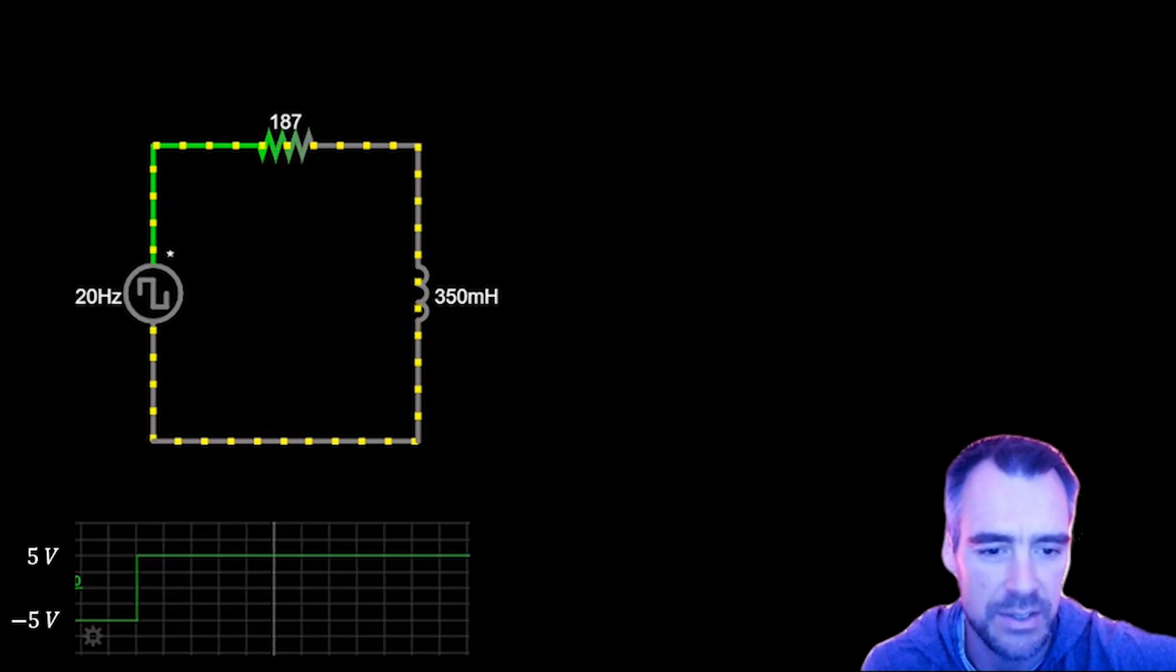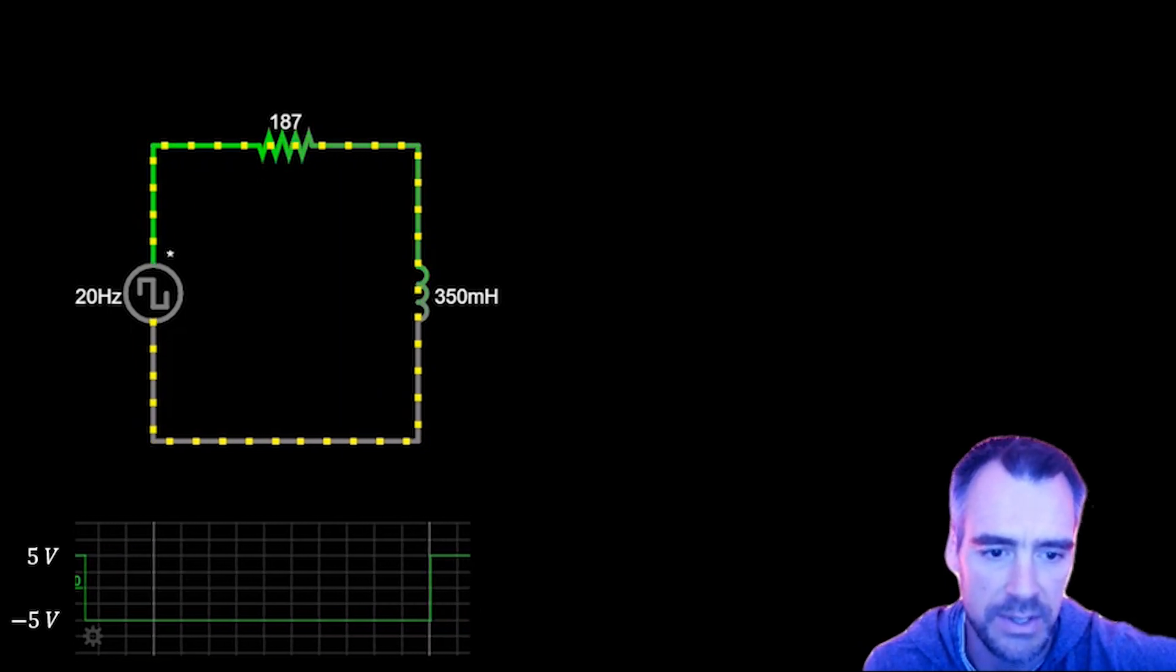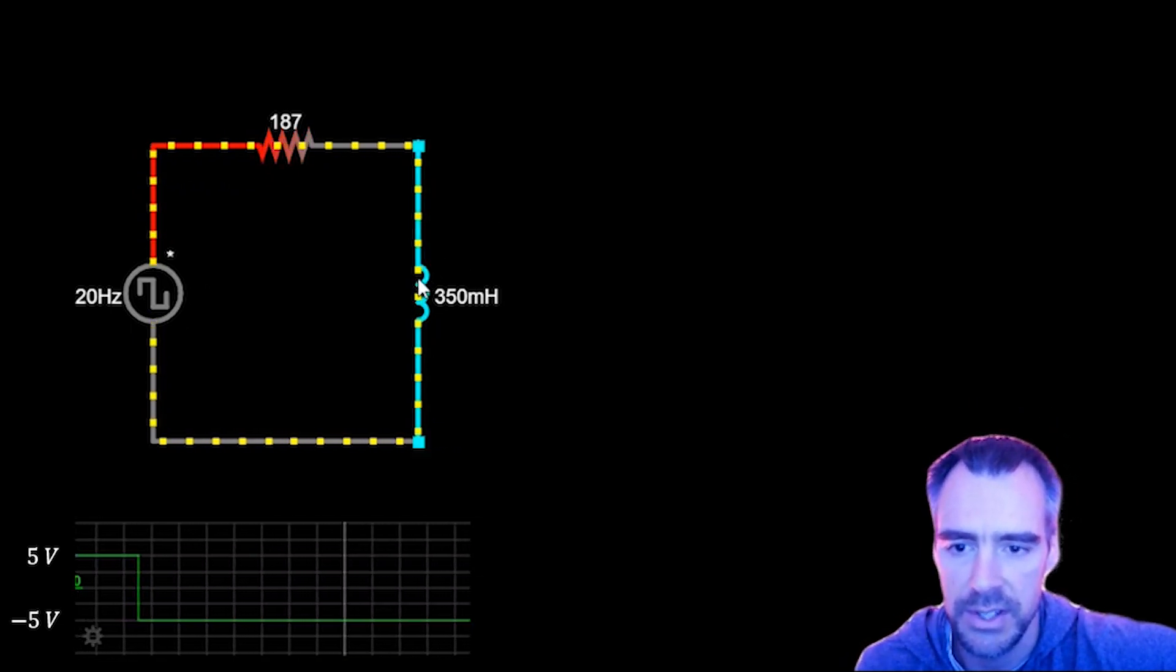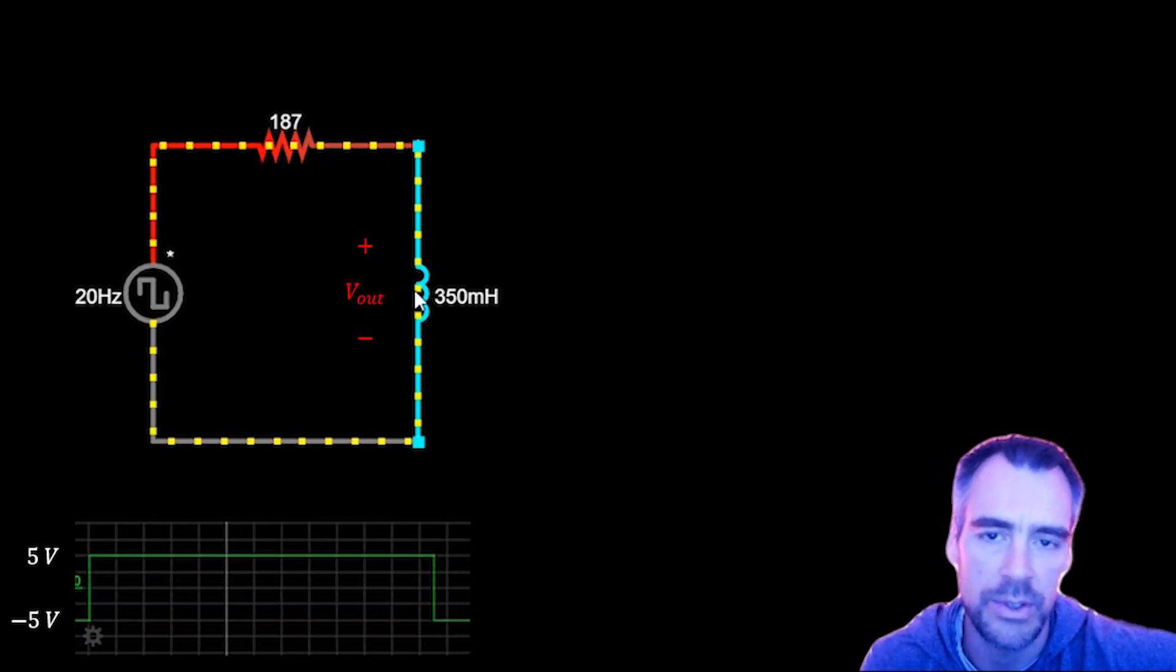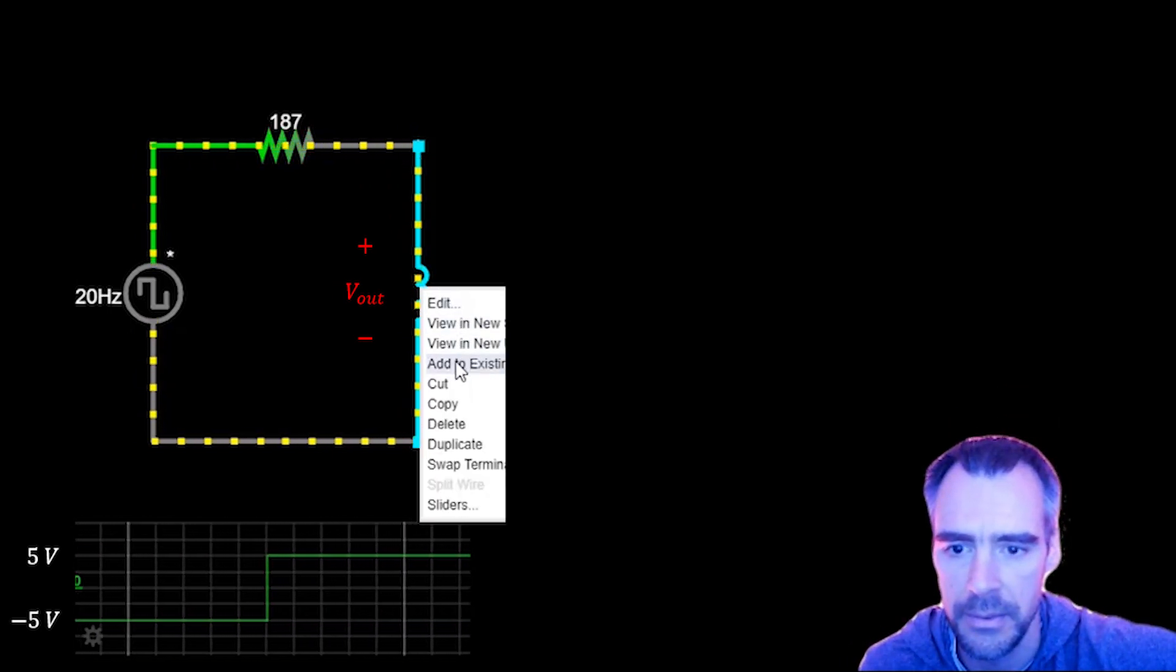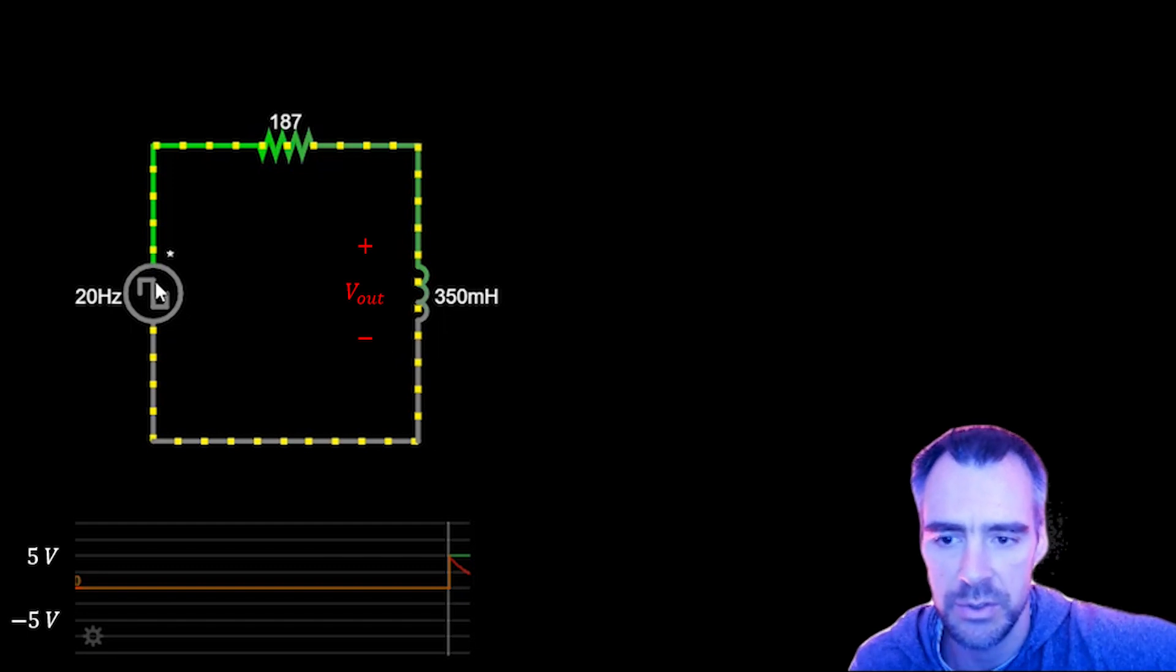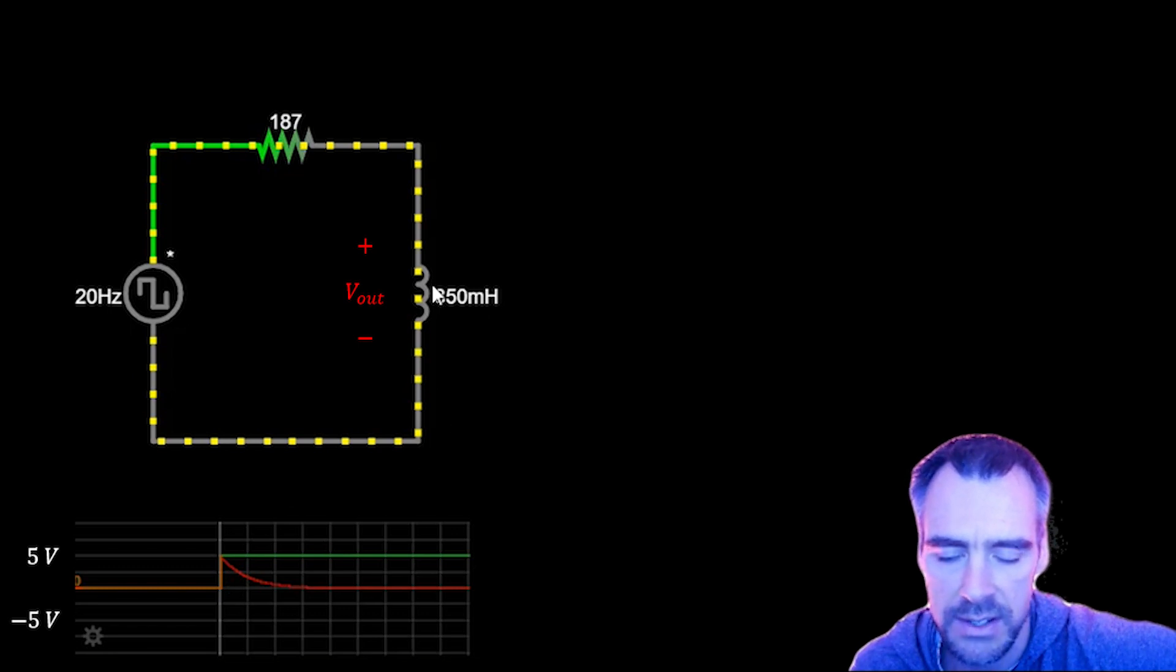It's just going to oscillate at 20 hertz, cycling between plus 5 and negative 5 volts. Of course, we're slowing it down here. This would be like a 50 millisecond duty cycle, but we're slowing that time down so we can see what's going on. Let's take a look at the voltage across this inductor because that is where our output voltage is going to be for a high pass RL filter.